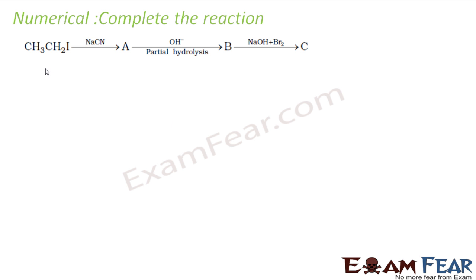We have to complete these reactions. This is ethyl iodide. When it reacts with NaCN, iodine is a good leaving group. CN will replace this iodine here. So what you will get for A is CH3CH2CN. That is propanenitrile.